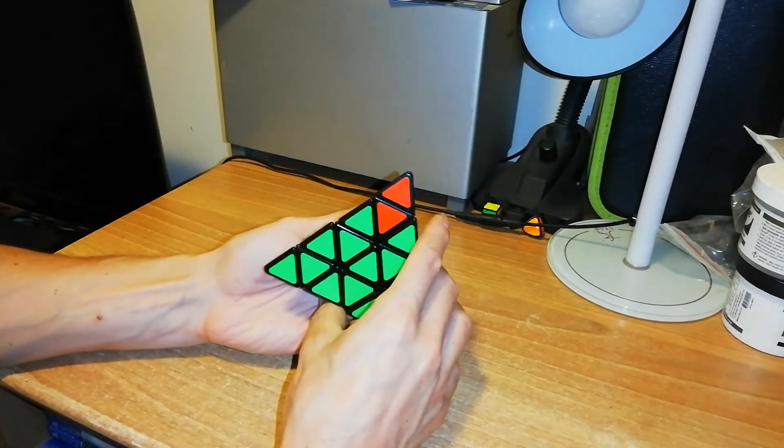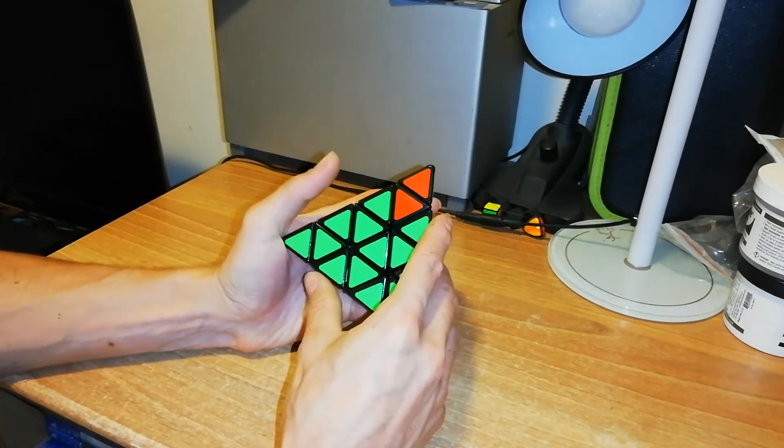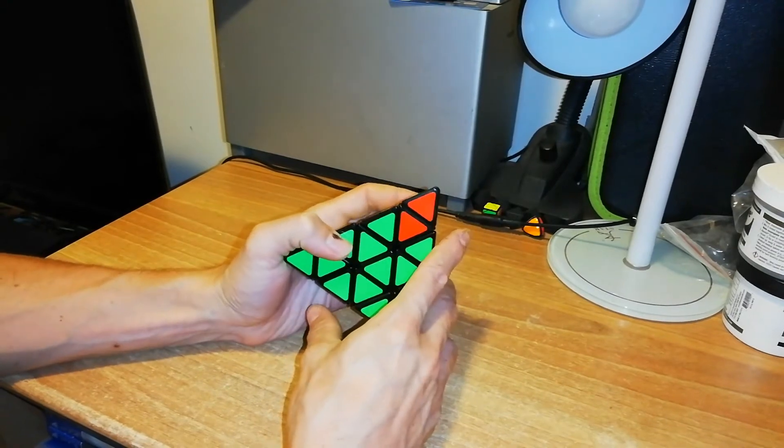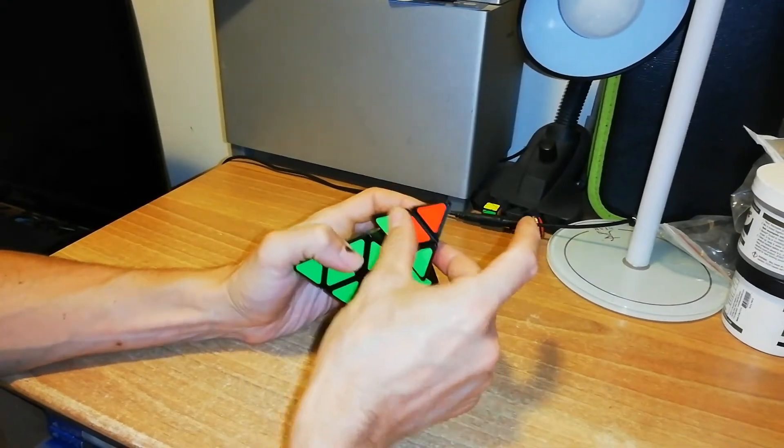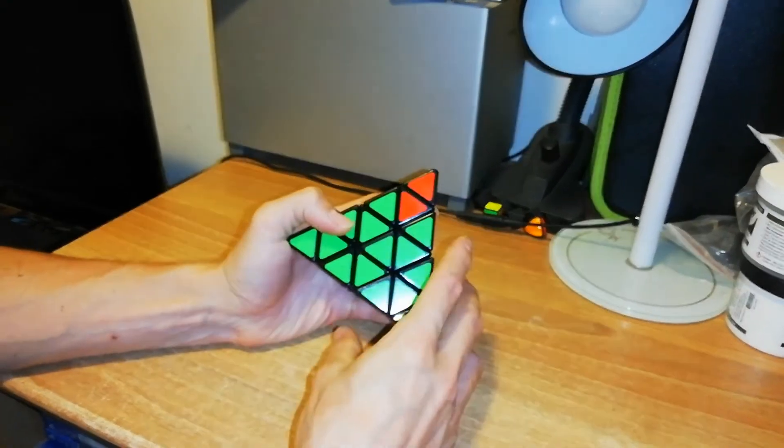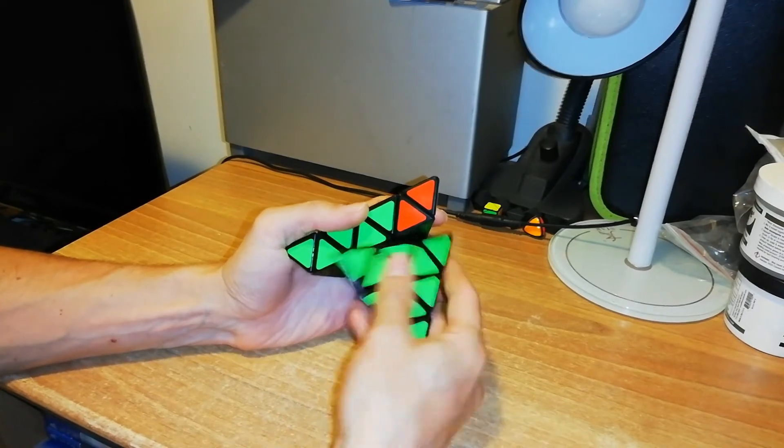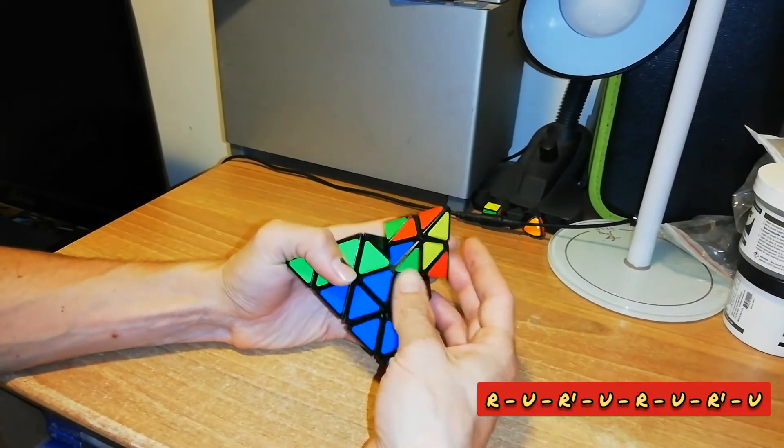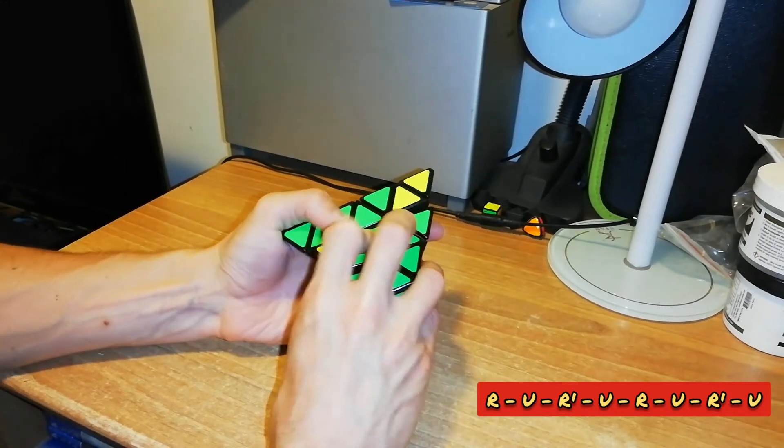layer. So if you do it now with this side R and then this U, so R U R' U R' U,